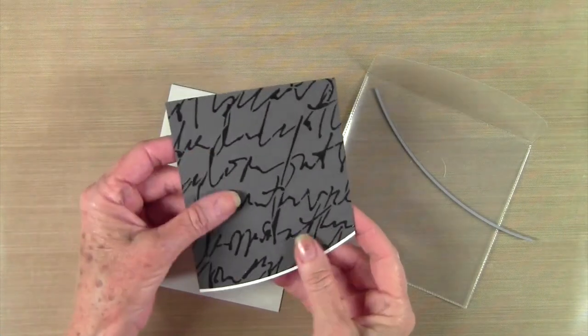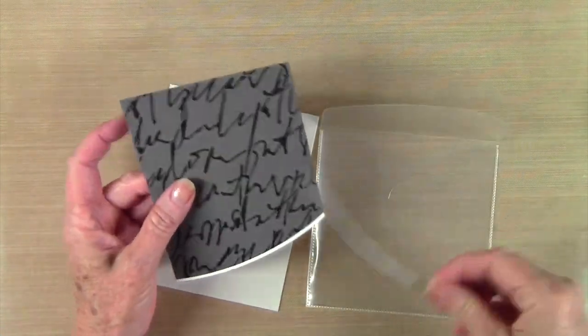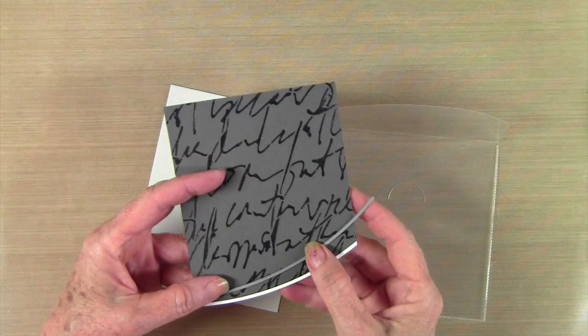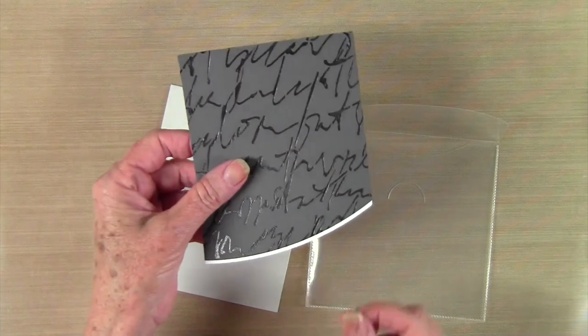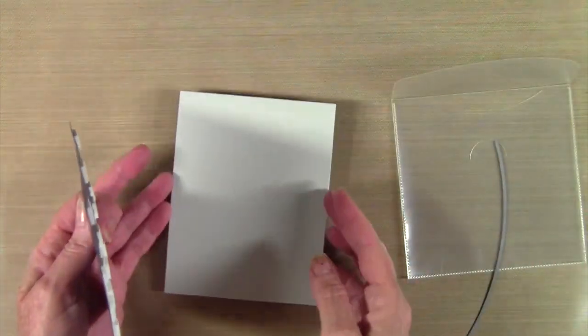I've let my paste dry, and then I've cut the bottom edge with the A2 curve die from Simon Says Stamp. I've also cut an additional white piece of paper with the same die, and it gives it a really nice elegant look on that bottom border.